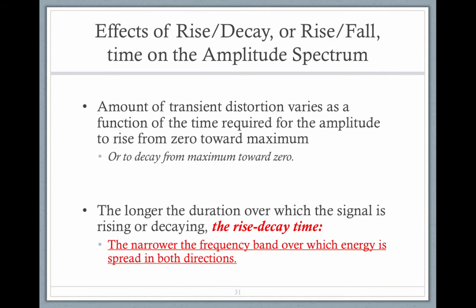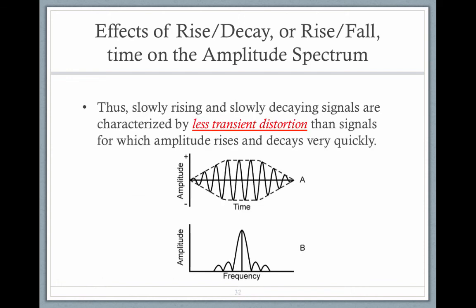And that's called the rise decay time. The longer the duration over which the signal is rising or decaying, the narrower the frequency band over which the energy is spread in both directions. Thus, slowly rising or slowly decaying signals are characterized by less transient distortion than signals for which amplitude rises and decays very quickly.